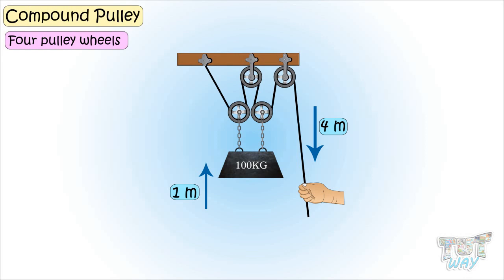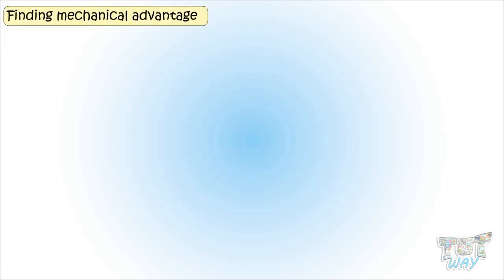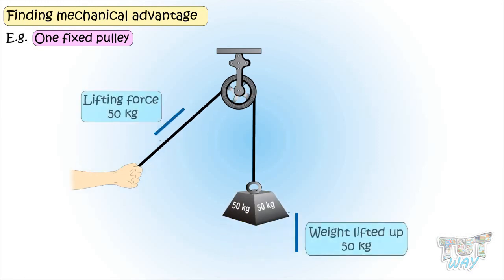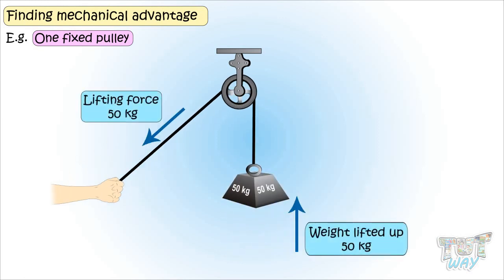Now let's see some examples of finding mechanical advantage. Here we have one fixed pulley. That is where pulley does not move at all and is fixed. And the weight is attached to one end of the rope. And the other end is free to be pulled by any person. For pulling or lifting a 50 kg weight, a force of 50 kg is required. So no mechanical advantage is there.